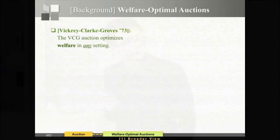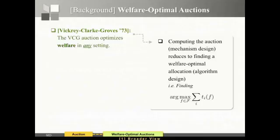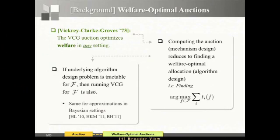Let me give background on how to optimize welfare or revenue in auctions. For welfare, we understand it really well. Vickrey, Clarke, and Groves showed that the so-called VCG auction optimizes welfare in any setting. I think of their result as a reduction from a mechanism design problem to an algorithm design problem: finding an auction that maximizes welfare reduces to just finding an allocation that maximizes welfare. If the underlying algorithm design problem is tractable for feasibility constraint F, you can run the auction. Recent work has shown this reduction can accommodate approximation as well.